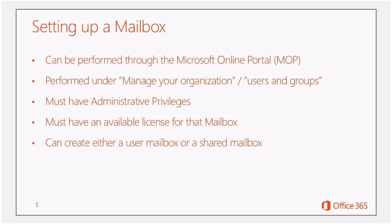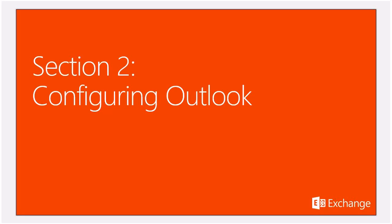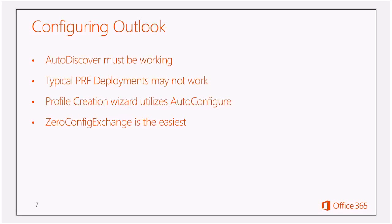Now that we've created a new mailbox, we'll go to Configuring Outlook. In order to configure Outlook to connect to the Office 365 mailbox, Auto-Discover must be working. That's where Outlook gets the bulk of information on how to connect to the mailbox. It also gets a little bit of information from Active Directory, for example the SMTP address, and then it queries that SMTP address to find Auto-Discover.